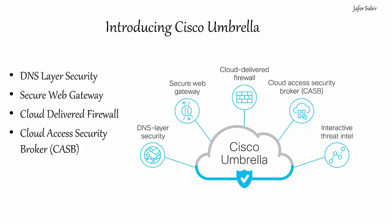There is also the Interactive Threat Intel feature, which is their threat research team. Cisco Umbrella originally started as a pure-play DNS security service in the cloud but has now built on that to include further security tools. Next, we will have a look at each of these security features to see what they provide.